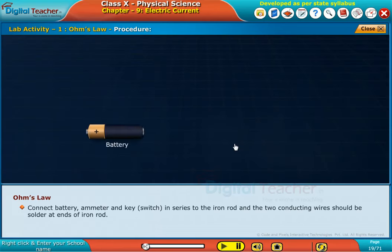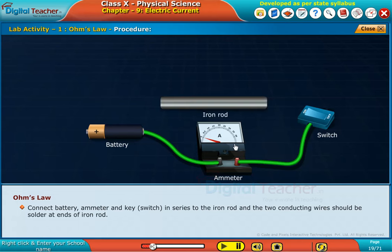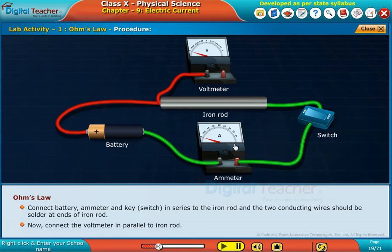Connect battery, ammeter and key that is switch in series to the iron rod and the two conducting wires should be soldered at ends of iron rod. Now connect the voltmeter in parallel to iron rod.